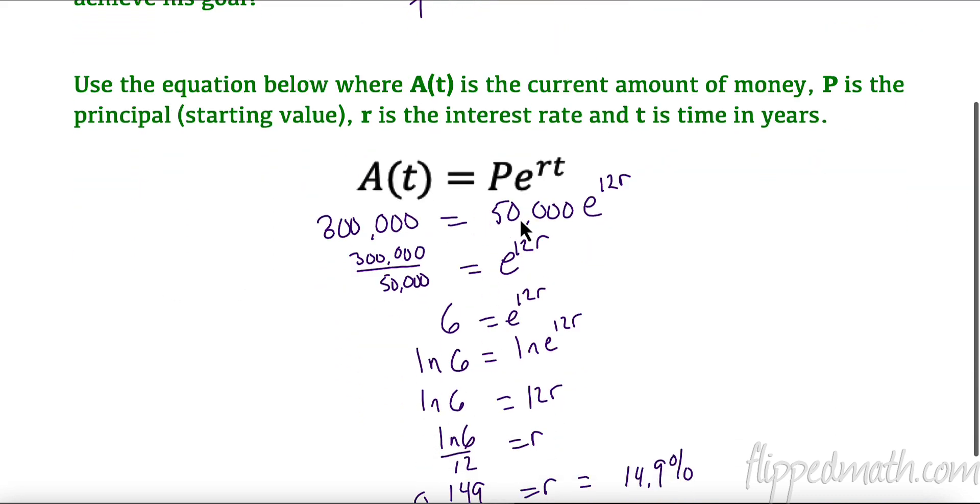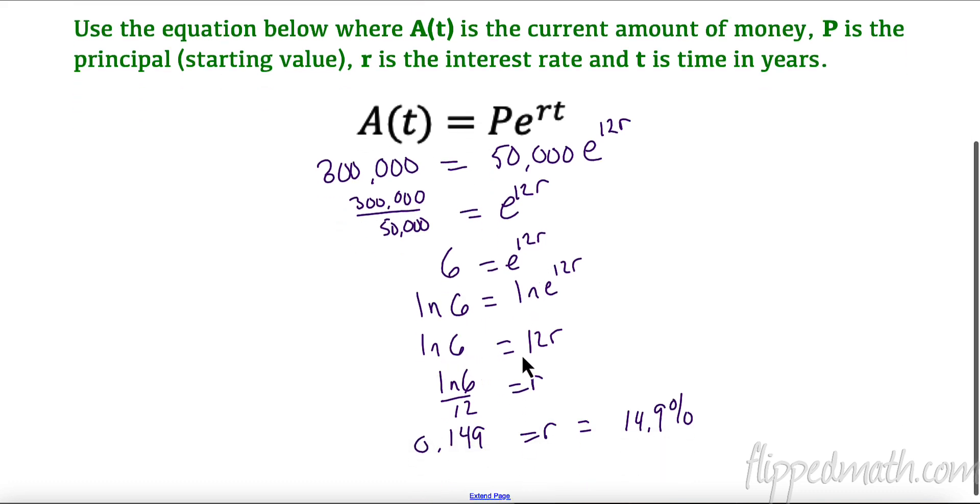Let's see how we plugged it in. The first thing I did was I divided by 50,000, that gave me 6. To get rid of this e to the power of 12r, I took the natural log of both sides. That gave me the natural log of 6 = 12r. I divided by 12 and I got 0.149, which really means he would need an interest rate of 14.9 percent and that ain't gonna happen probably. So good luck getting that Lamborghini. Maybe if you found some really good stocks and bonds, but I don't see that happening.